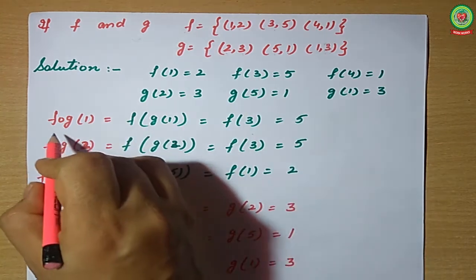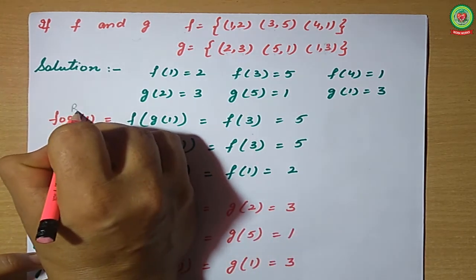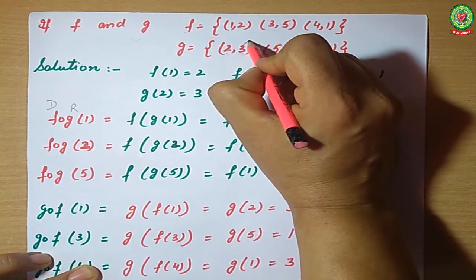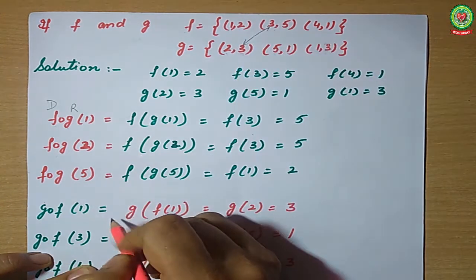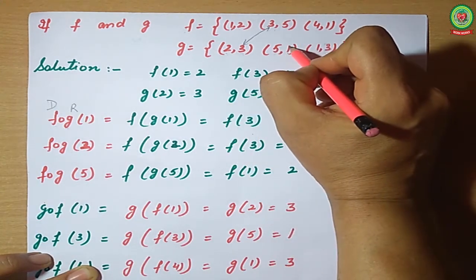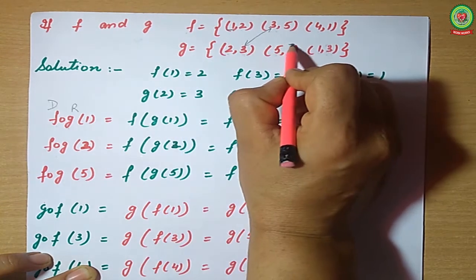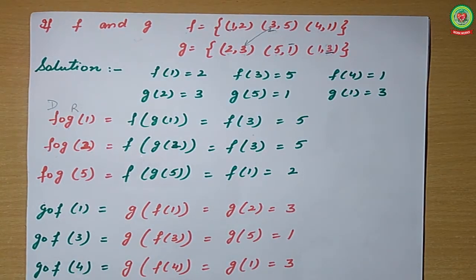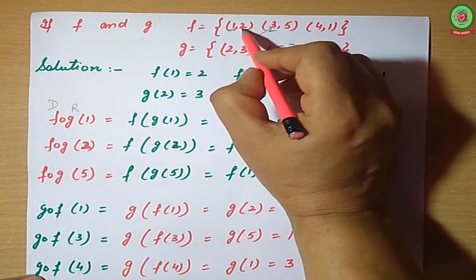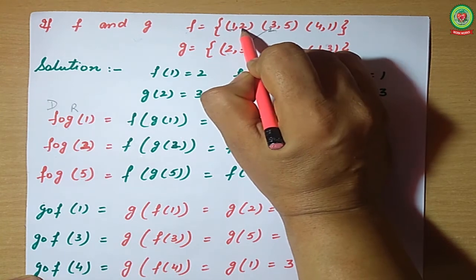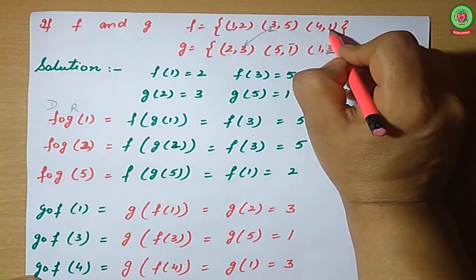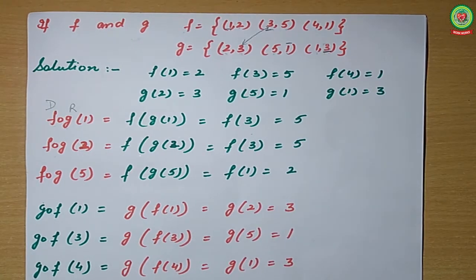First we will check for fog. For fog, range of g must be a subset of domain of f. Checking the values: range of g is {3,1} and domain of f is {1,3,4} — so fog exists. Now for gof, range of f must be a subset of domain of g. Range of f is {2,5,1} and domain of g is {2,5,1} — so gof also exists.